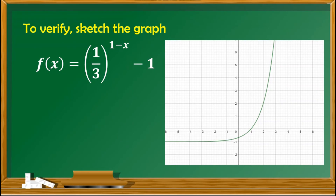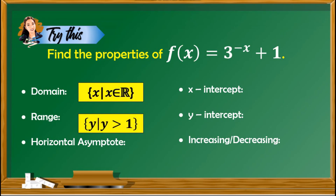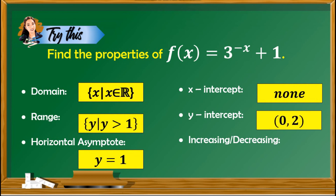If you would like to verify your answers are correct, you may graph the function using any graphing software. Now try to answer the following items to check your understanding. Let's check our work: the domain is the set of real numbers; the range is y is greater than 1; the horizontal asymptote is y equals 1; the x-intercept is none; the y-intercept is (0, 2); and the behavior of the graph is decreasing.